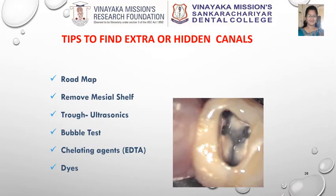In certain cases, missed or extra canals are also present. These can be accurately found using the dentinal roadmap by removing the mesial shelf and troughing using ultrasonics, and the champagne bubble test — in which sodium hypochlorite is placed in the chamber and the bubbles will indicate the presence of missed canals.